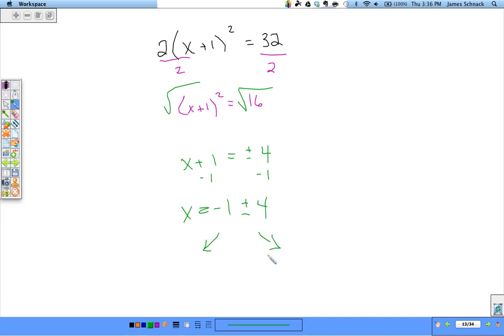x = -1 ± 4. And since those are just plain old ordinary numbers, x = -1 + 4 or x = -1 - 4. x = 3 or x = -5.